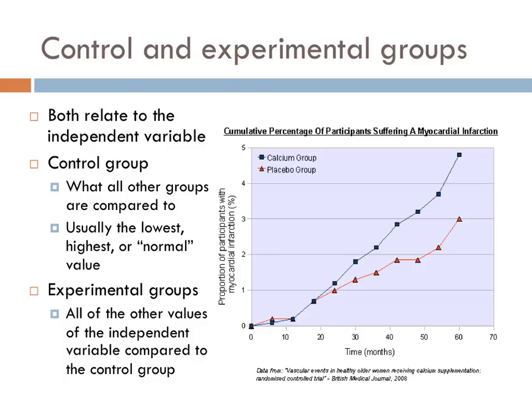The graphic to the right shows the effect of different drugs — either calcium pills or a placebo, a sugar pill — on the percent of patients suffering a myocardial infarction, or a heart attack, over a period of months. In this experiment, the placebo would act as the control group.